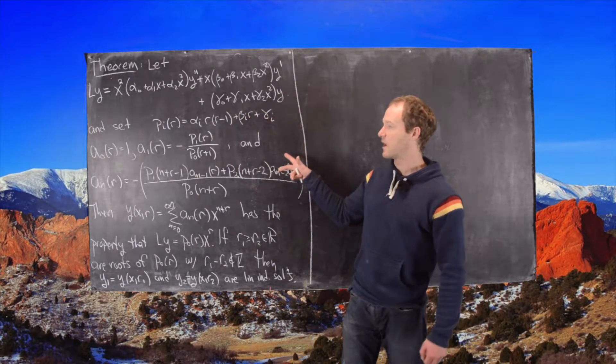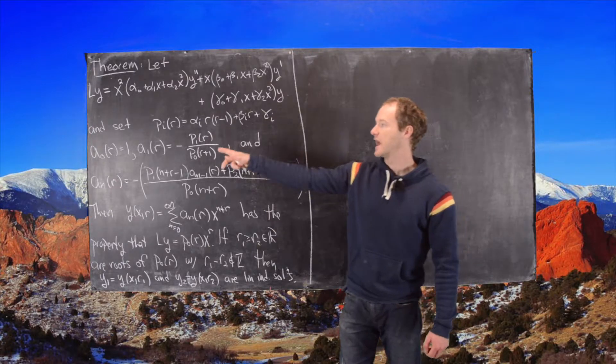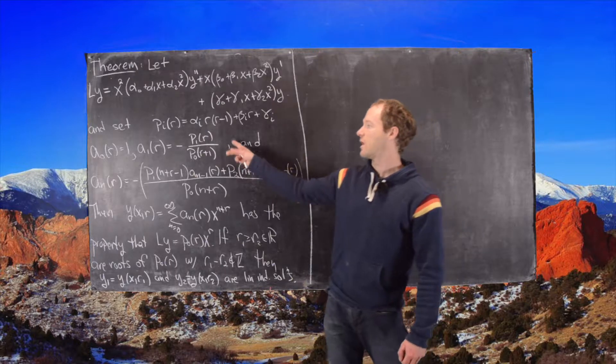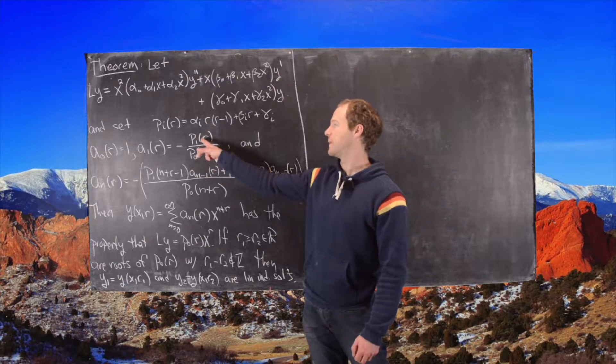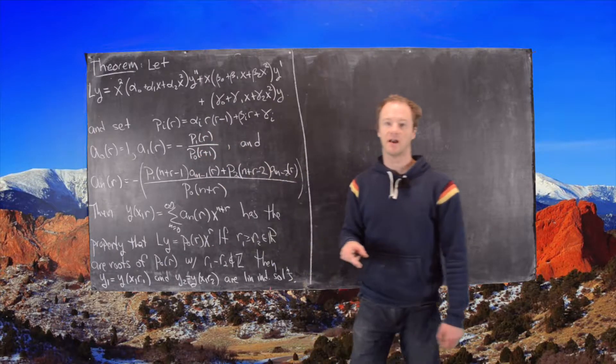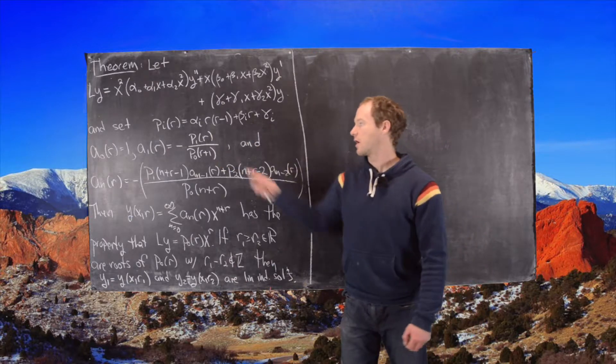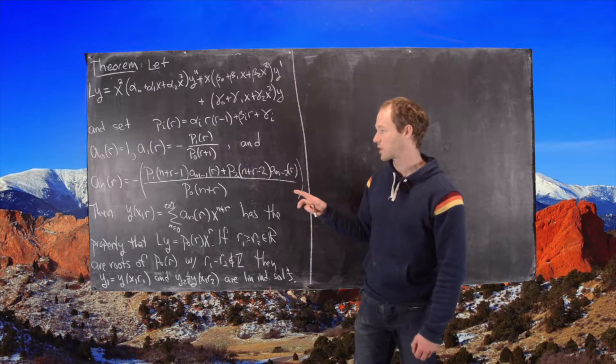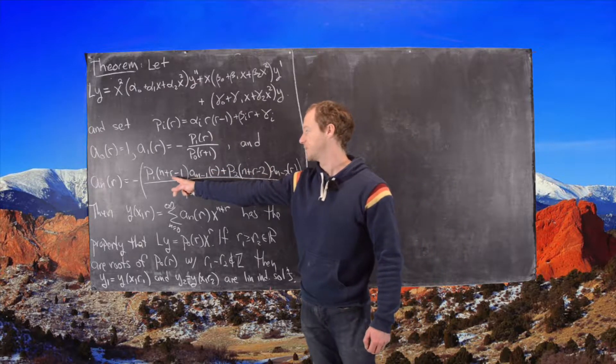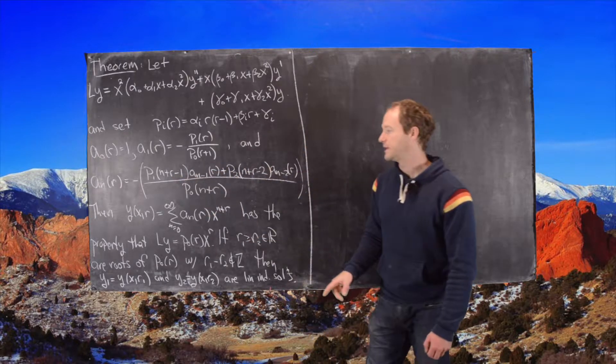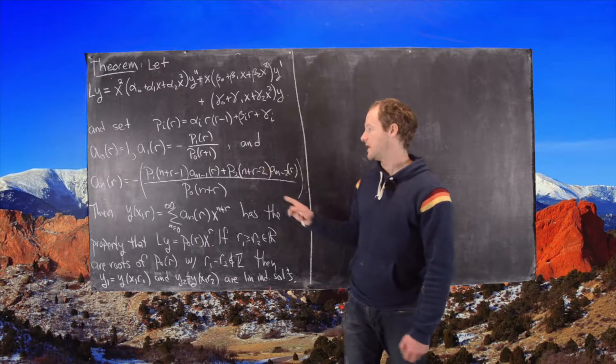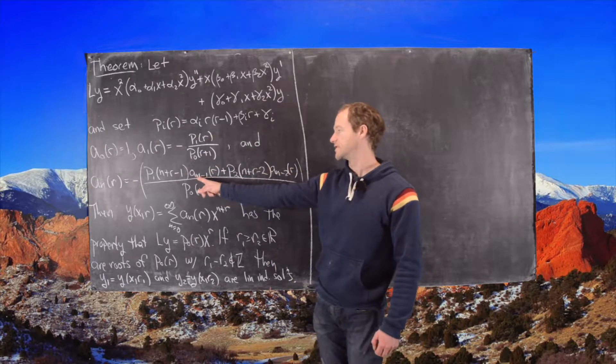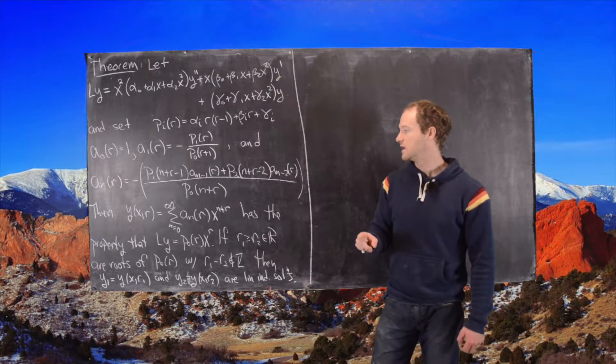And then we define the following coefficients. So we have a_0 of r is 1, a_1 of r is this quotient of the polynomial p_1 and p_0 evaluated at r and r plus 1 respectively. And then we have this two-step recursion involving the polynomials p_1, p_2, and p_0 all evaluated at slightly different spots that allows us to write a_n of r in terms of a_{n-1} and a_{n-2}.